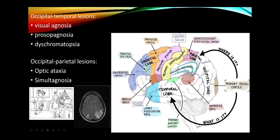For visual processing: identifying what is seen requires connection from the occipital lobe to the temporal lobe. Bilateral occipitotemporal lesions cause visual agnosia — inability to identify objects, cars, or faces (prosopagnosia), or colors (dyschromatopsia). Occipitoparietal lesions cause difficulty knowing where objects are in space: optic ataxia, poor eye-movement coordination, and simultanagnosia — inability to take in a whole visual scene at once.